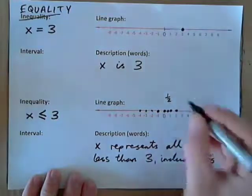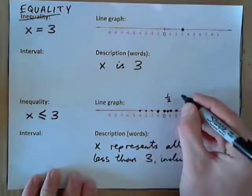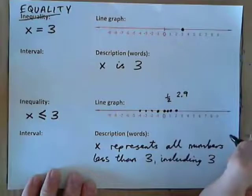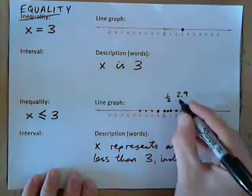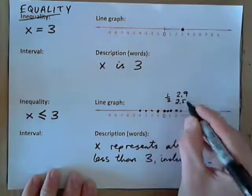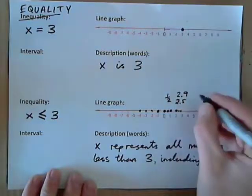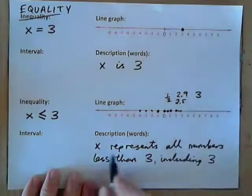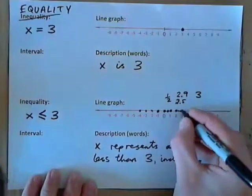Does x represent 2.9? Is that less than 3? Yes — there it is: 2.9. And also 2.5 — that's right there. So, it represents all the decimals. Does x represent the number 3? Well, it represents all numbers less than 3 including 3, so x is less than or equal to 3 — so yes, it does represent 3.